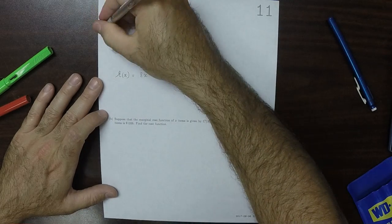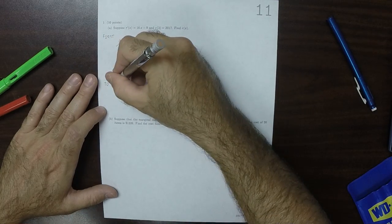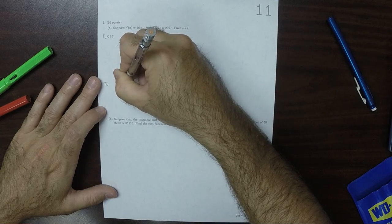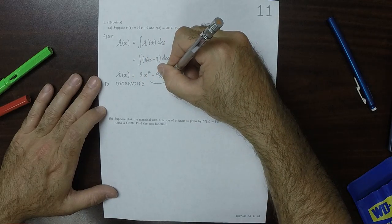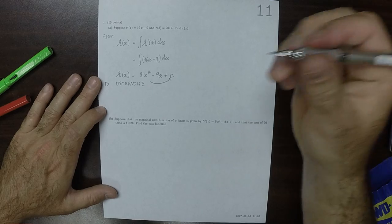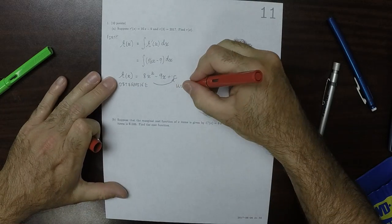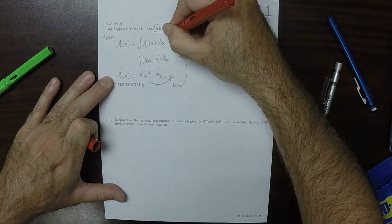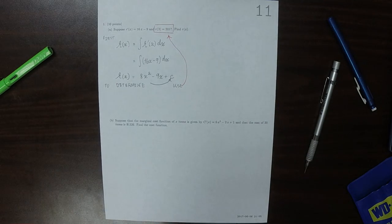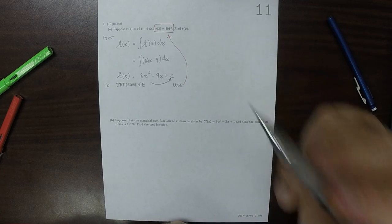So now, that's the first step. And now, to determine the value of c, which we haven't figured out yet, we're going to use this extra piece of information. So what it's saying, what that red piece of information is saying, it's saying you'll know you have the right c when you plug in 3 and you get 2017.